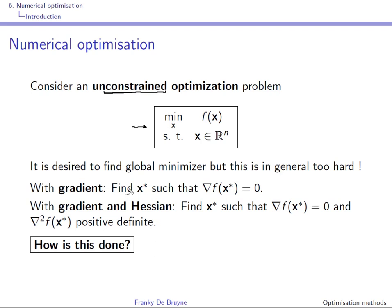We would like to find the global minimizer, but in most cases these methods will converge to a local minimizer x*. If you have gradient information, the idea is to find x* that makes the gradient zero. If you have gradient and Hessian information, the idea is to find x* that makes the gradient zero and the Hessian positive definite.